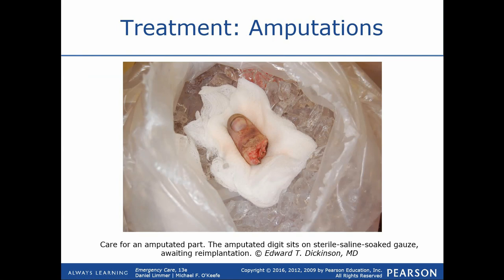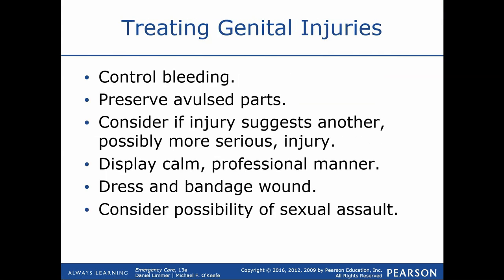A reminder on amputations: place the amputated part on a dry piece of gauze, put it in a clean zip-lock bag, then place that bag into a bag of ice. Be sure to notify the hospital that you have the amputated part — the surgeon is going to want to see it for potential reattachment. With genital injuries, consider the possibility of sexual assault — the entire body and surrounding scene become a crime scene, so the patient's clothing and everything else should be preserved and collected as evidence.